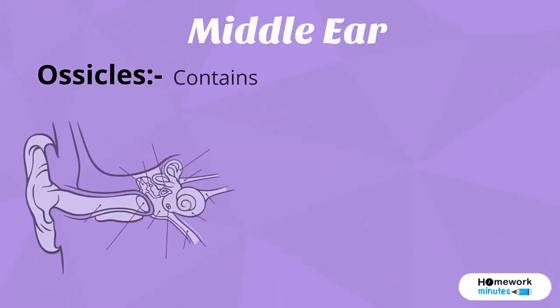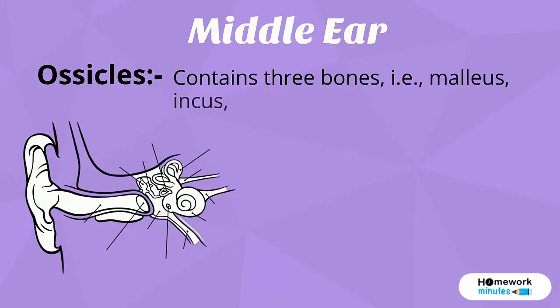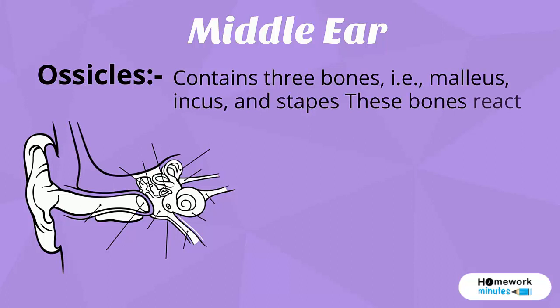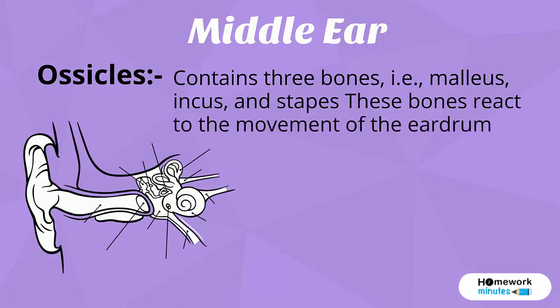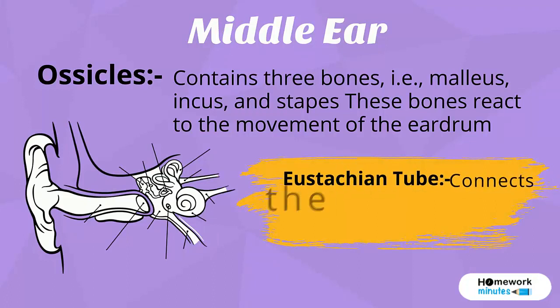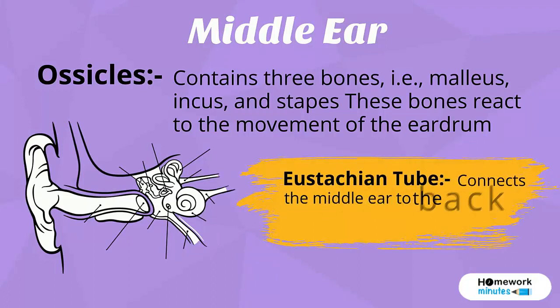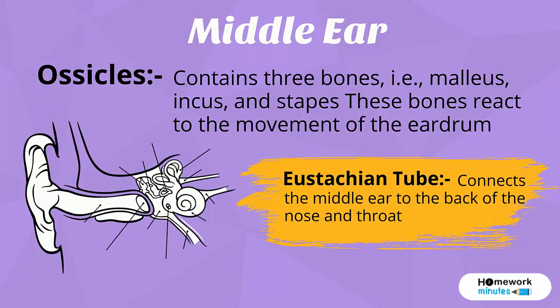The middle ear contains the ossicles, which are three bones: the malleus, incus, and stapes. These bones react to the movement of the eardrum. The Eustachian tube connects the middle ear to the back of the nose and throat.